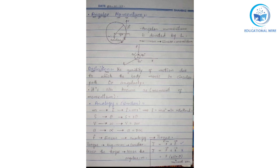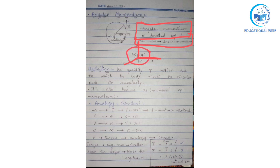Now we should know what angular momentum is and what is the basic definition of it and how it relates to other quantities. Angular momentum is denoted by L. As I told you, mv is equal to linear momentum, that is p. We know that p is linear momentum, r is position vector, and their angle will be 90 degrees — it's the maximum angle, that is 90 degrees.